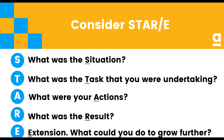First of all we're establishing what the situation was — perhaps what was taking place at the time, what problem or challenge you were facing. Then what was the particular task that you were undertaking — setting the scene, what were you working on at the time. Then your actions or involvement: a good area to comment on if you had particular responsibilities or ideas, or if you were functioning as part of a team. Then what was the result — which is a really important one — rounding it out to: here was the situation or problem, here were some things we put in place, here was the result. And it doesn't necessarily have to have been successful, because we want to be able to comment on areas for growth, learning, and areas of interest.